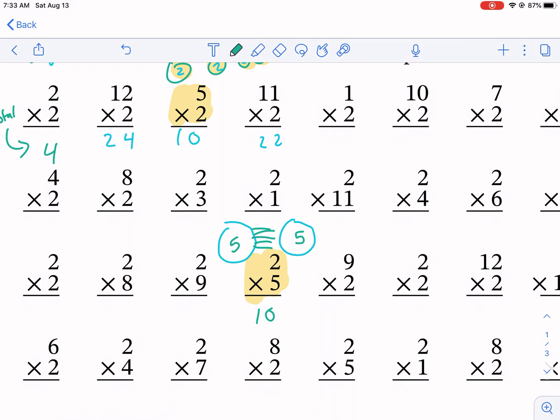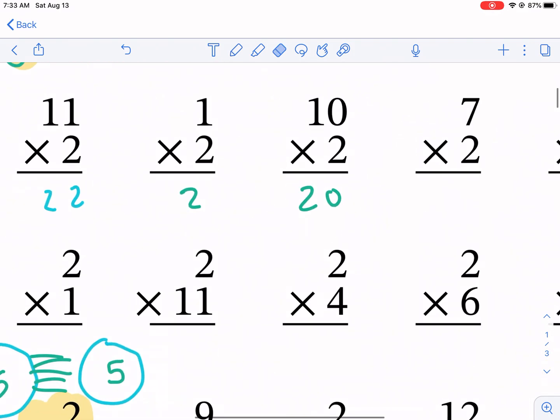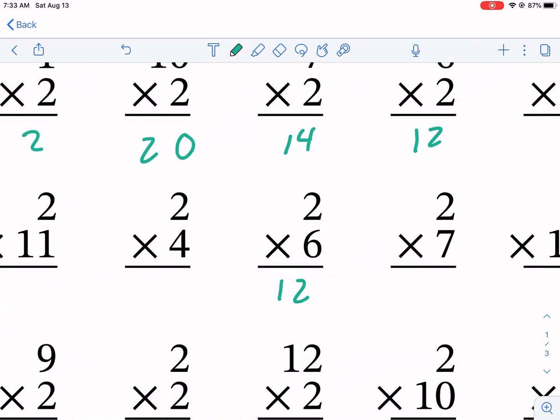So with all these numbers we're just going to be doubling. Oh, here's a two-digit number: we multiply two times zero, that's just zero, and then we do two times one, and that's two, so that's 20. We're just doubling all these numbers: 14, 12—same thing.